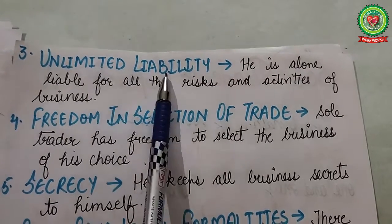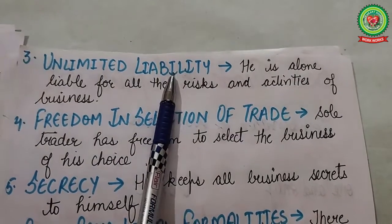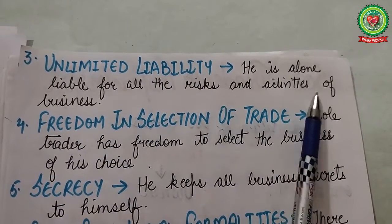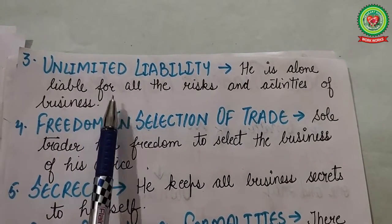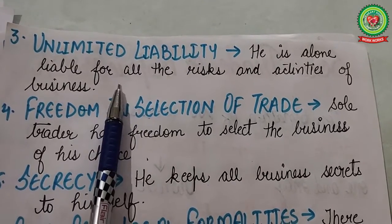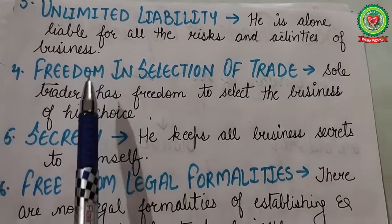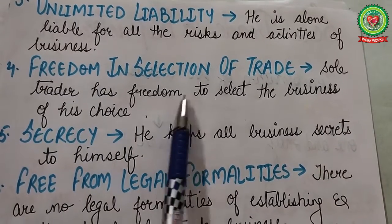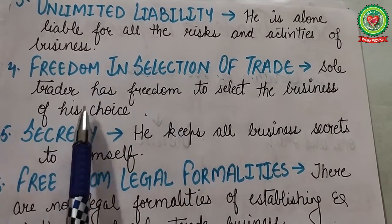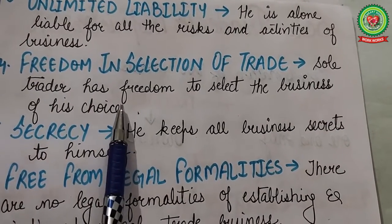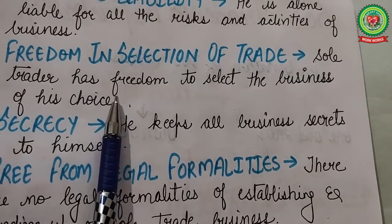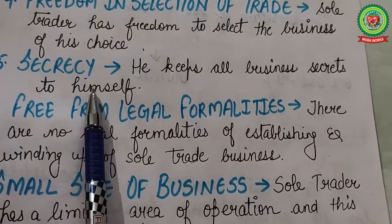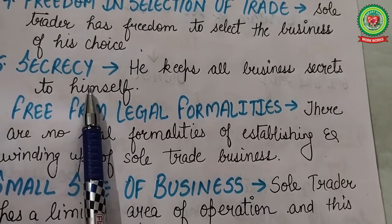The next characteristic is unlimited liability. The liability of the sole trader is unlimited — he is alone liable for all the risks and activities of the business, and his personal property is also held liable. Next is freedom in selection of trade — the sole trader has the freedom to select any business of his choice and does not have to consult with any other person while selecting a business.